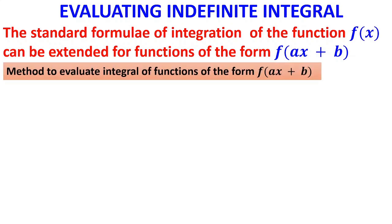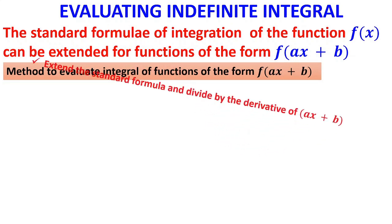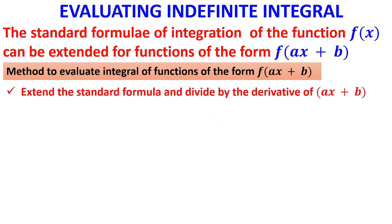How to do it — the method to evaluate it: just extend the formula and divide by the derivative of (ax + b). You can also remember it this way: divide by the coefficient of x. You should be very careful — divide by the coefficient of x.